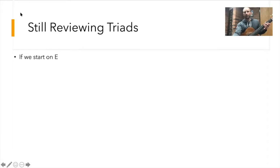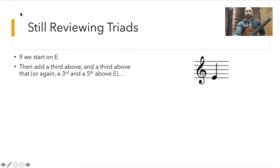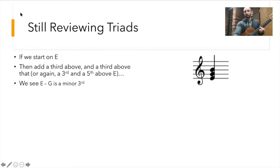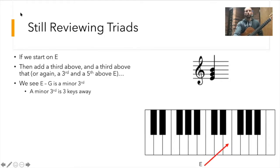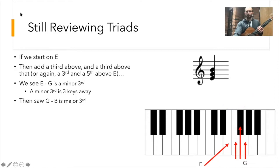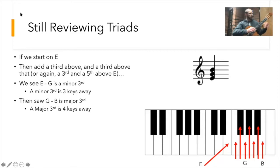But let's keep going. We also looked at another triad. For example, if we start on E, and then add a third, and then another third on top of that, we get E, G, and B. As we saw before, E to G was a minor third — it's three keys away. That's the root, one, two, three frets. A half step and a whole step together makes three keys away. Then we saw that G to B is a major third, meaning it's four keys away, just like C to E was four keys away.